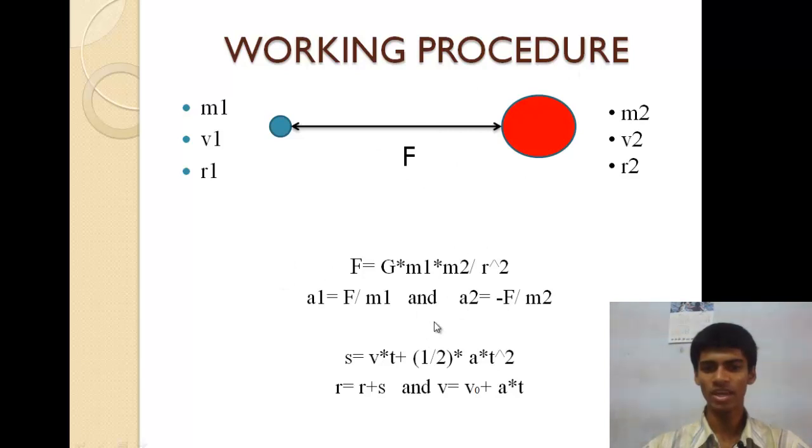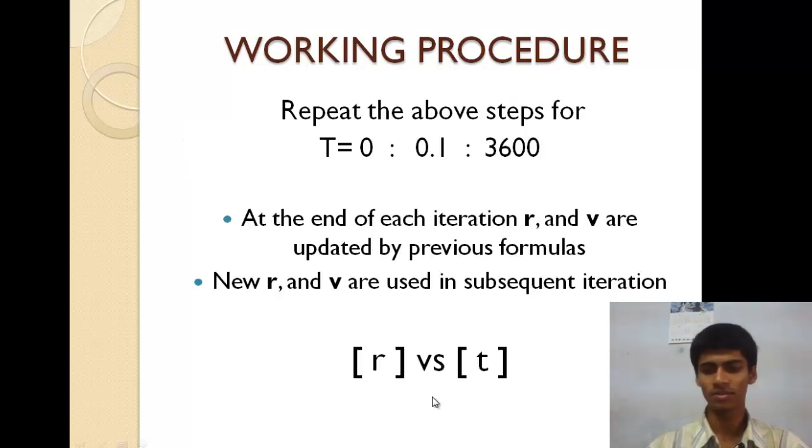At the end of each iteration, the value of R and V are updated by previous formulas. These new R and V are used in subsequent iteration. At the end of complete iteration, I have a set of R values and a set of T values.